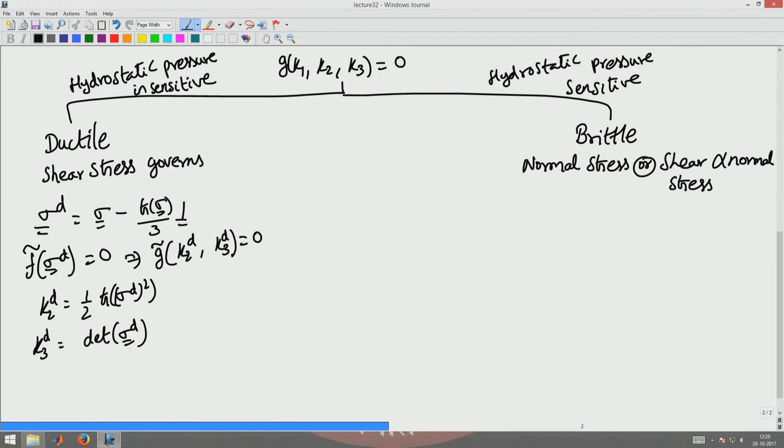You can evaluate this in terms of sigma also but that I leave it as an exercise. When both normal stress and shear stress govern the failure or normal stress alone governs the failure, you have to retain the original form which is K1, K2, K3 being equal to 0. This is a general expression for failure theories of this class.